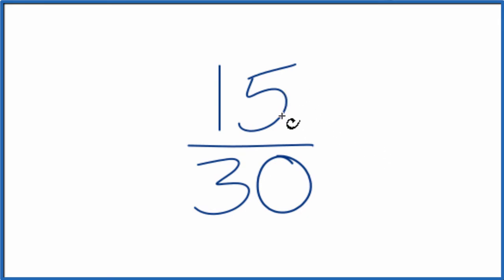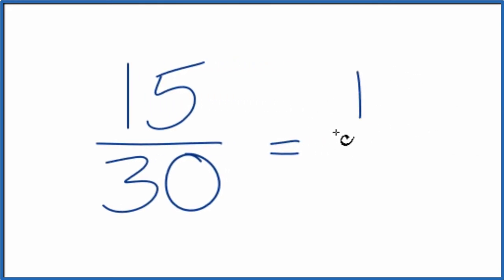If you know that 15 goes into 30 two times, we could just divide 15 by 15. That gives us 1. And if we divide 30 by 15, that gives us 2. So 15 over 30 equals 1 half. This is as low as we can get. This is the simplest form for the fraction 15 thirtieth.